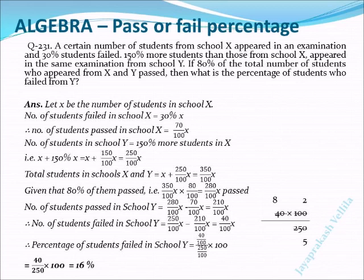Given that a certain number of students from school X appeared in an examination and 30% failed. Suppose X be the number of students in school X, then number of students failed in school X equals 30% of X. Therefore number of students passed in school X equals 70% of X, because 70 plus 30 is 100.